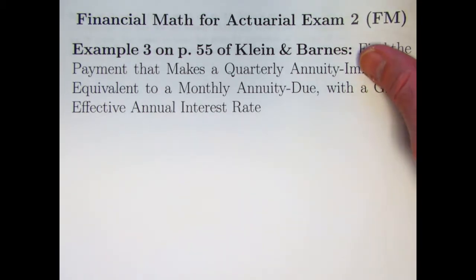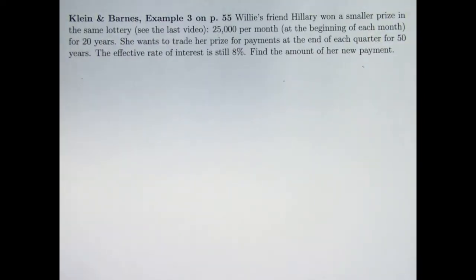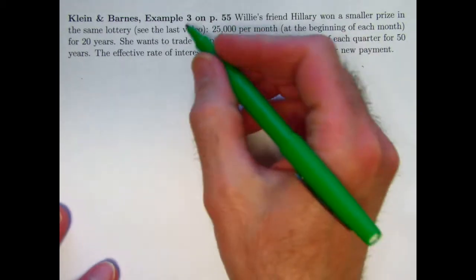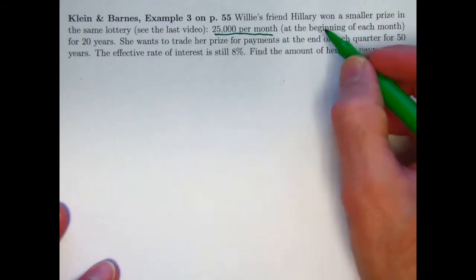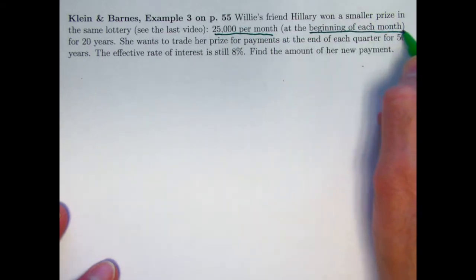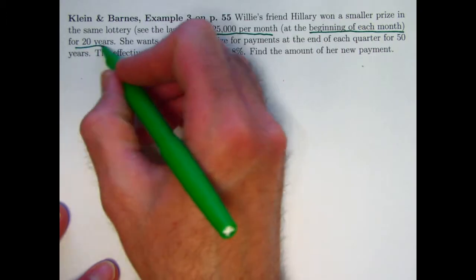In the last video, we were looking at Willie who won the lottery. Here we're looking at Willie's friend Hillary. I wonder why those names go together. Who has won a smaller prize from the same lottery. She's won a prize of $25,000 a month at the beginning of each month. That's an annuity due for 20 years.